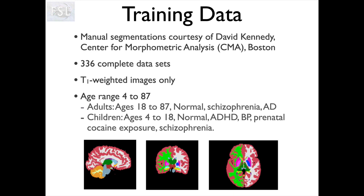The labeling has been done on T1 weighted images only, and it covers a very wide range of demographics. It includes both adults and children, and includes a range of healthy individuals as well as very common pathologies, including schizophrenia, Alzheimer's disease, ADHD, and other things which are present in the population. That's deliberate so that we can have a tool which is very general and applies to a broad range of images.